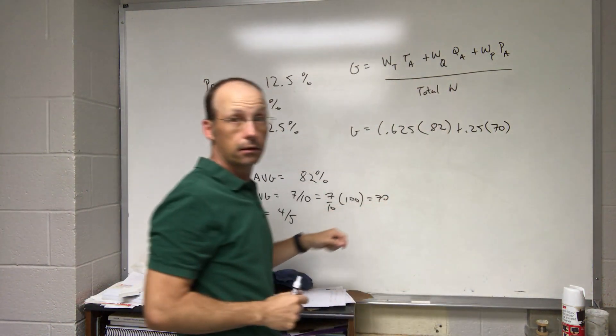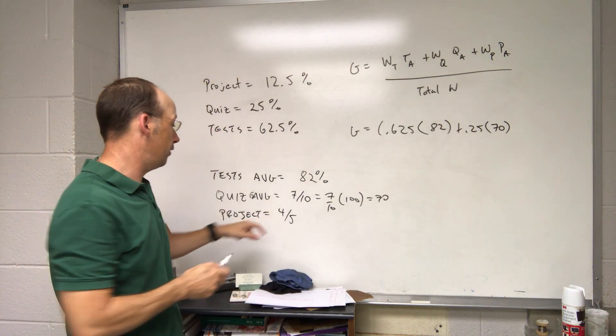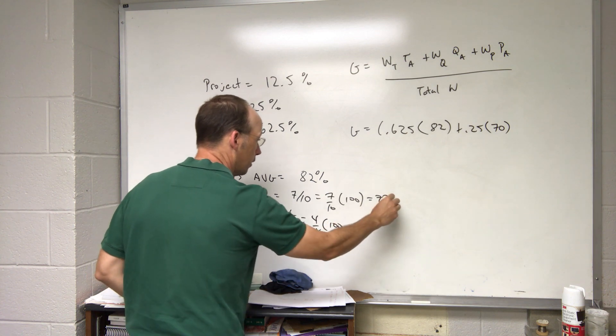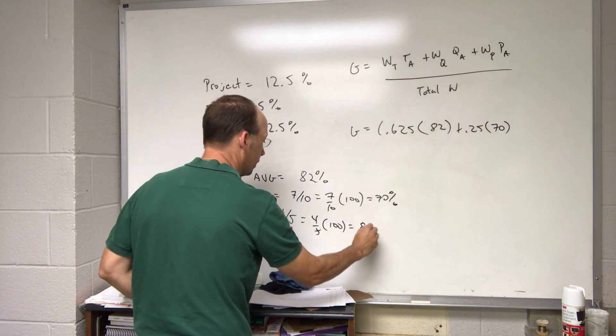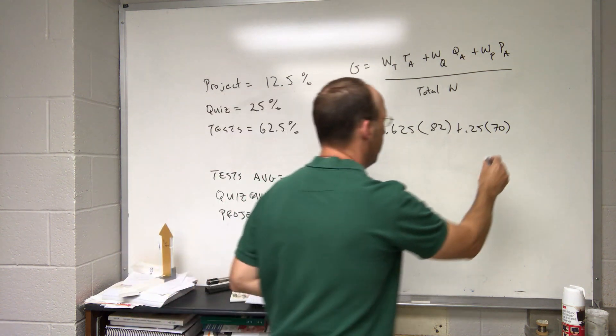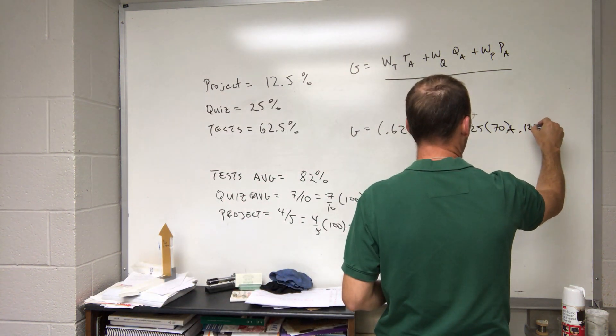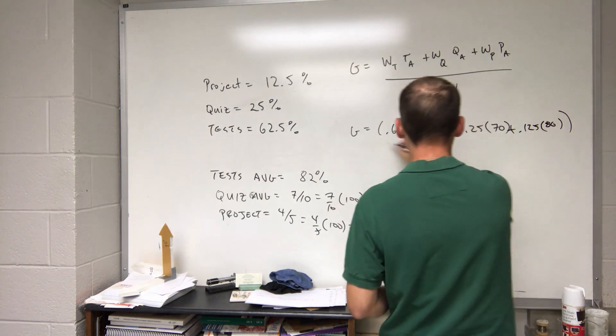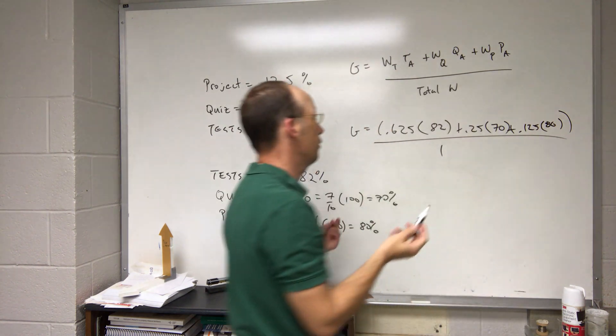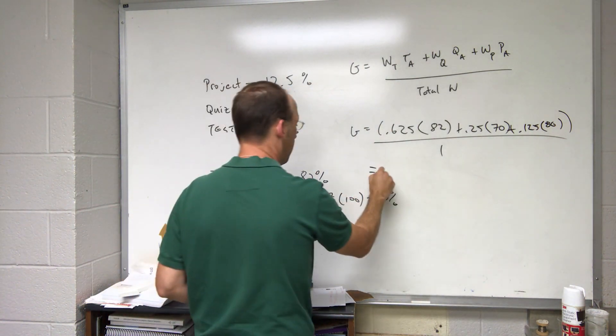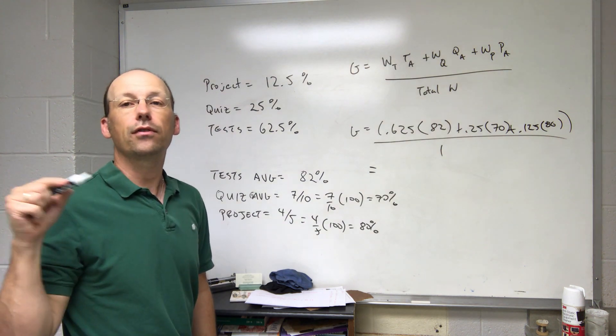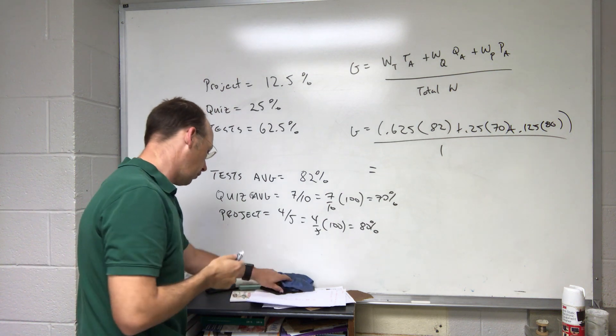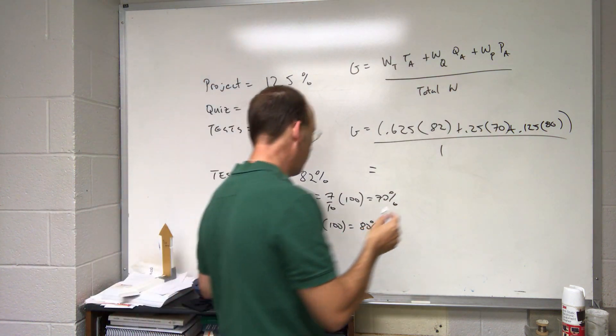And then down here I need to do the same thing. This is going to be 4 out of 5 times 100—that's percent—equals 80%. So I'm going to put plus 0.125 times 80. And then all of that divided by 1 because it all adds up to 1. And if I do that, I put that in my calculator which I already did because I wanted to save time, because now I'm wasting time by talking about how I saved time. Okay, so then I get 78.75.